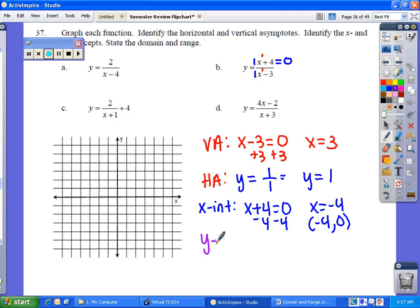And your y-intercept is when you place zeros in for your x values. So you wind up getting y equals zero plus four over zero minus three, which is four over negative three. So your y-intercept is at zero negative four-thirds.